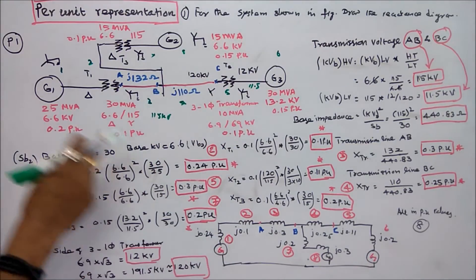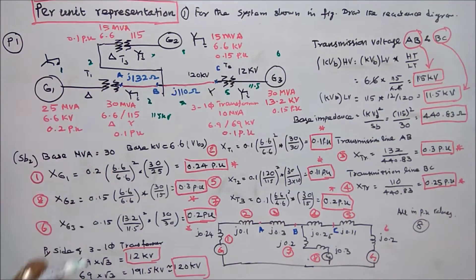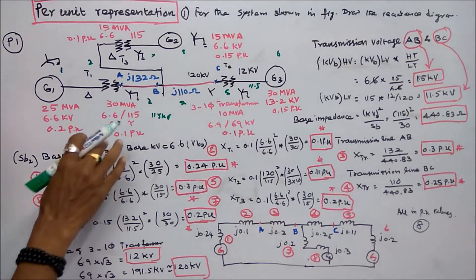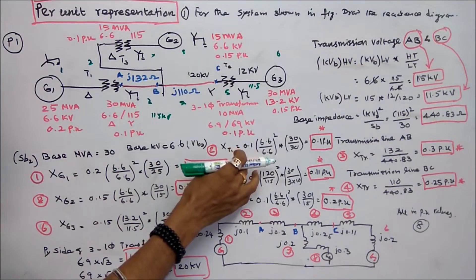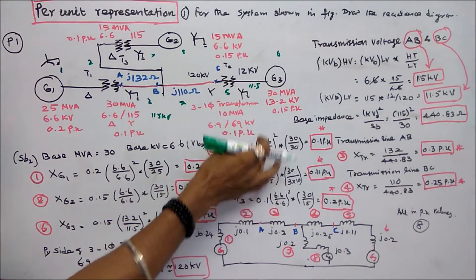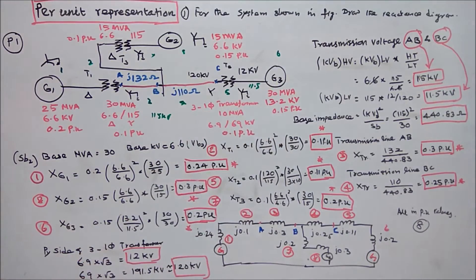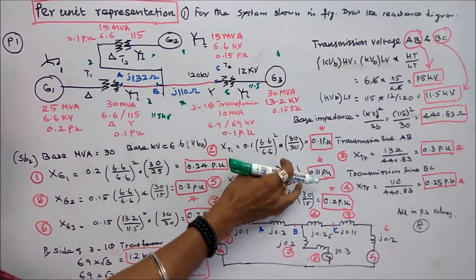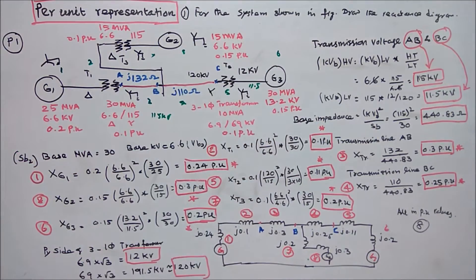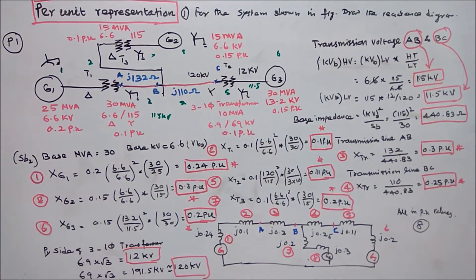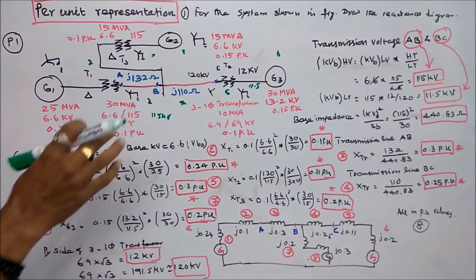The second component is transformer T1. The given reactance is 0.1. Per unit = 0.1 × (6.6/6.6)² × (30/30) = 0.1 per unit.